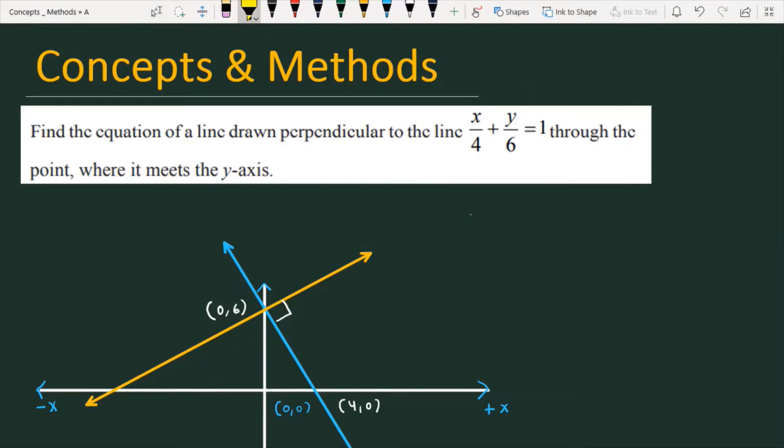Find the equation of a line drawn perpendicular to the line x/4 + y/6 = 1 through the point where it meets the y-axis. Let's see how we will solve this problem.